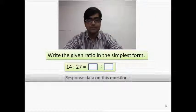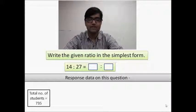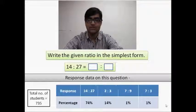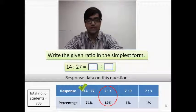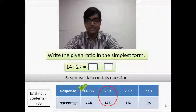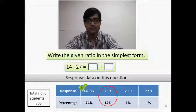The response data for this question shows us that out of 735 students who attempted this question, 74% got it right. But around 14% wrote 2:3 as their answer. We can see that the students seem to have a misconception regarding how ratios are to be reduced.